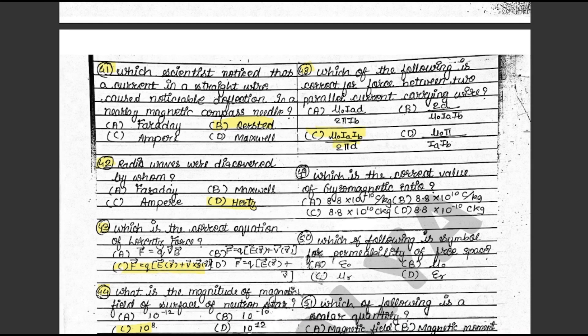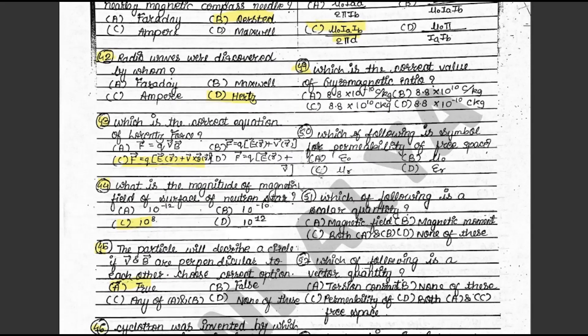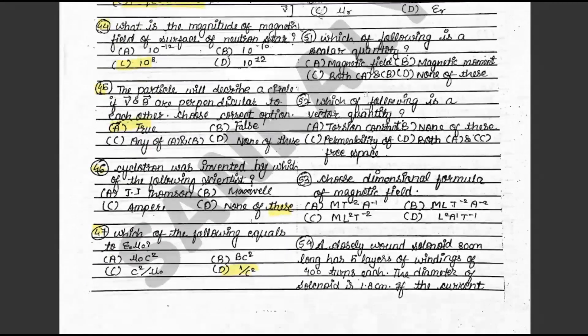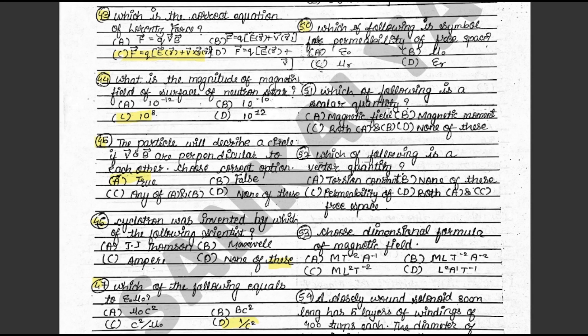Question 49: Which is the correct value of the gyromagnetic ratio? The answer is B: 8.8 × 10¹⁰ coulomb per kg. This is on textbook page 163. Question 50: Which of the following is a symbol for permeability of free space? The answer is B: μ₀. This is on textbook page 168. Question 51: Which of the following is a scalar quantity? The answer is D: none of these. This is on textbook page 168.